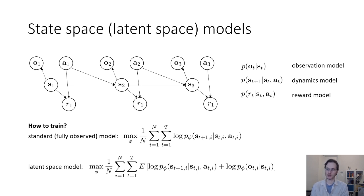If we knew the states, then this would be easy. Then we would just add together log P phi st plus 1 given st at to log P phi ot given st. The problem is that we don't know what s is. So, we have to use an expected log likelihood objective where the expectation is taken over the distribution over the unknown states in our training trajectories. Those of you that are familiar with things like hidden Markov models, it's basically the same idea.